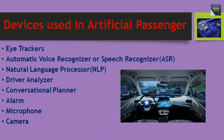Devices used in artificial passenger include: eye trackers, automatic voice or speech recognizer, natural language processor, driver analyzer, conversational planner, alarm, microphone, and camera.